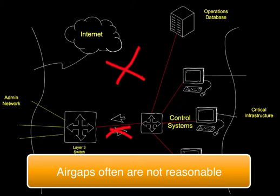Air gaps are sometimes used to achieve this separation, but air gaps aren't appropriate in most cases. For example, PCI DSS or manufacturing systems must report information to admin systems, and this requires movement of large amounts of information. Use of mobile storage for this is a security issue all by itself.